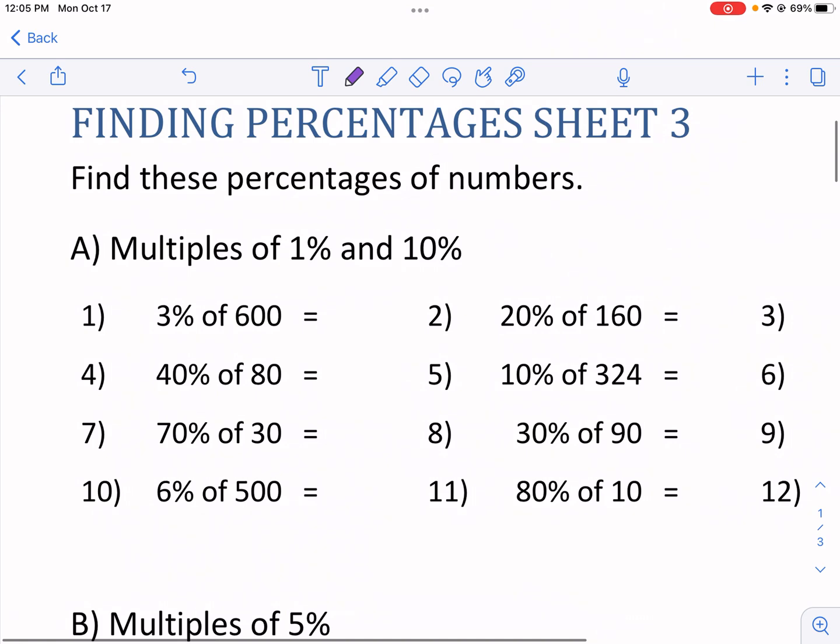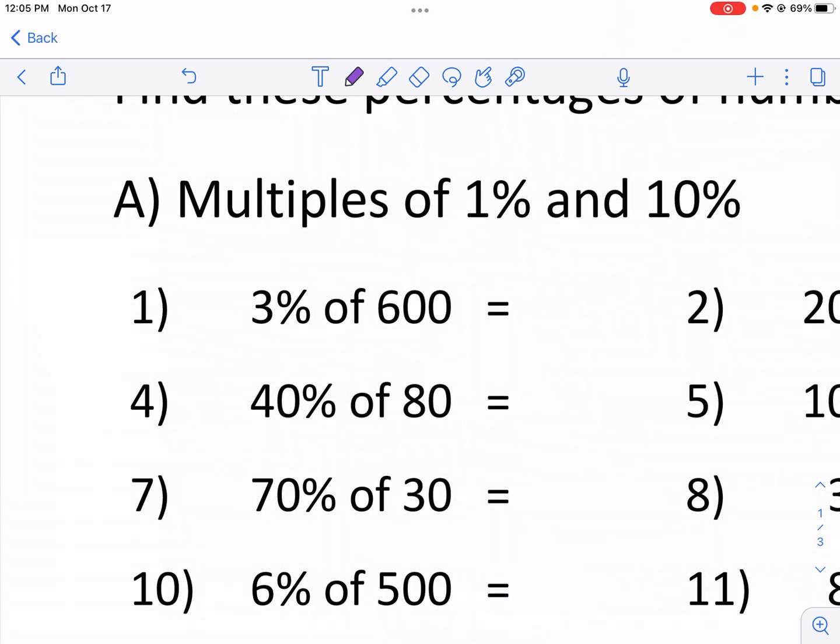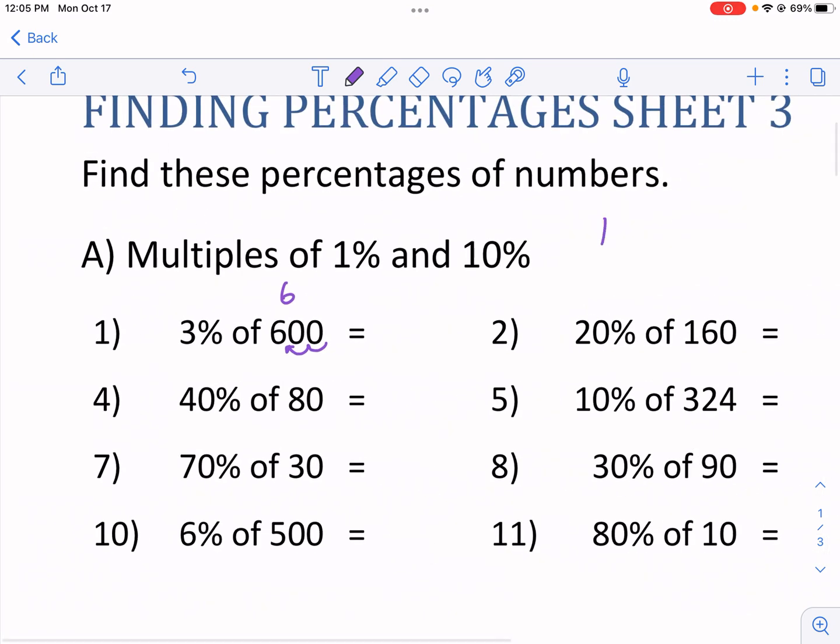If we're trying to find 1% of something we just need to move the decimal place over. You're probably thinking, hey this says 3% not 1%. Well I know that 1% I'm going to move this decimal place two times over. So I move it over twice and I know that 1% is simply 6. That's because 1 is 1% of 100.